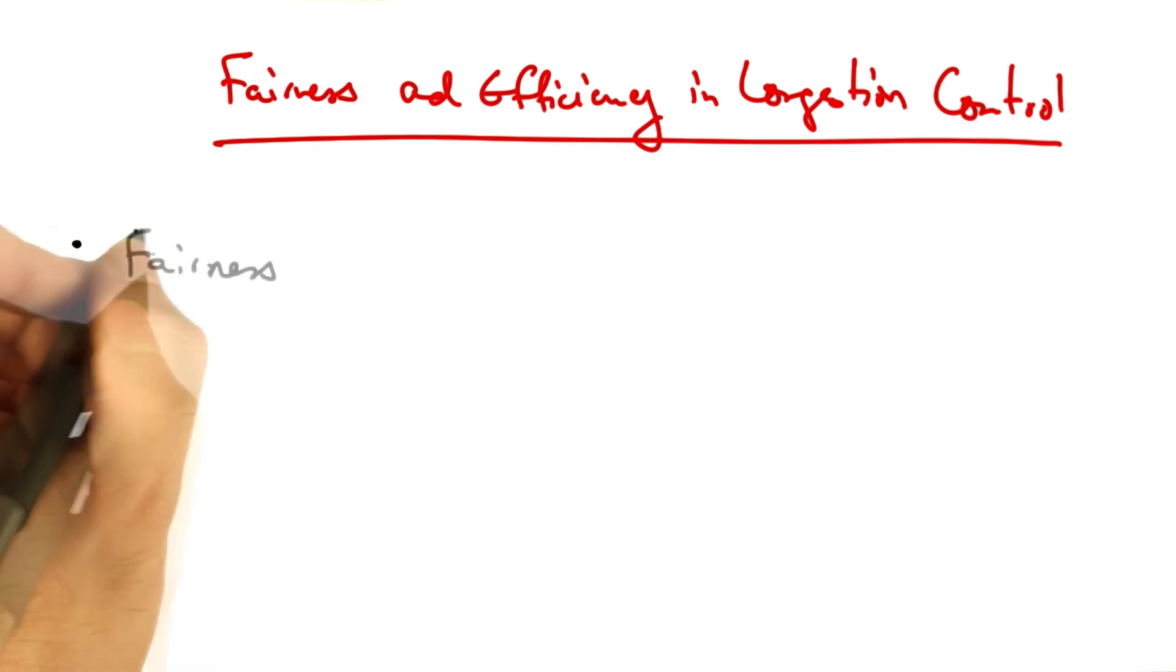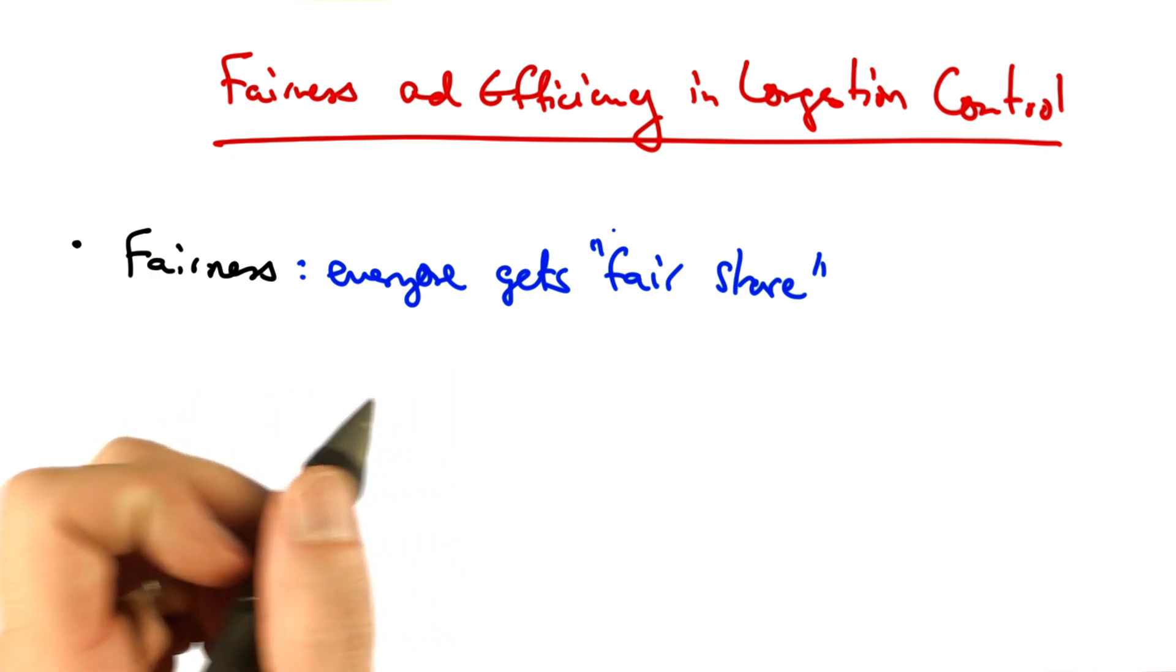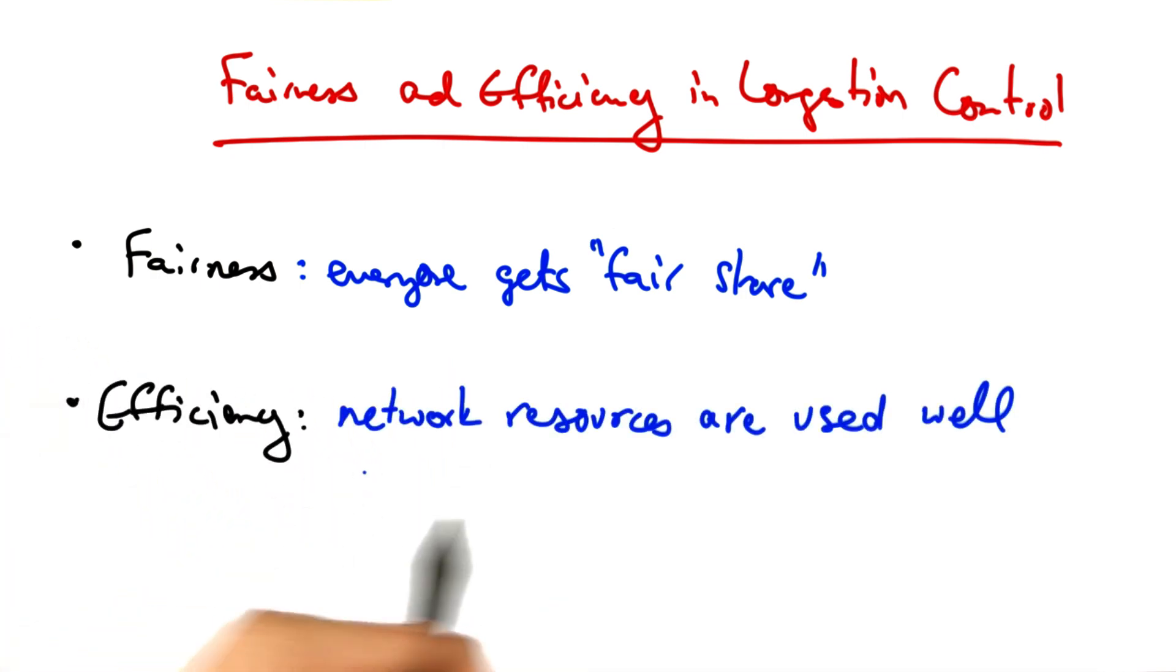The two goals of congestion control are fairness, meaning every sender gets their fair share of the network resources, and efficiency, meaning that the network resources are used well. In other words, we shouldn't have a case where there's spare capacity in the network and senders have data to send but are not able to send it. So we'd like the network to be used efficiently but also shared among senders.